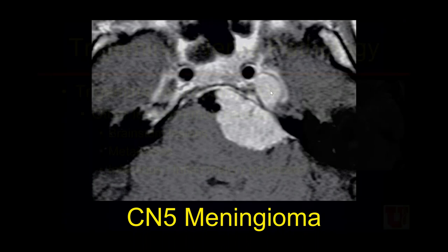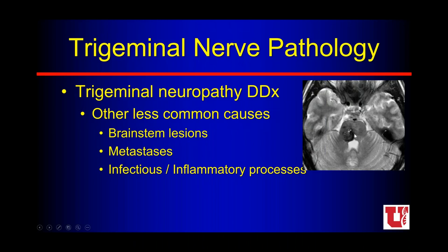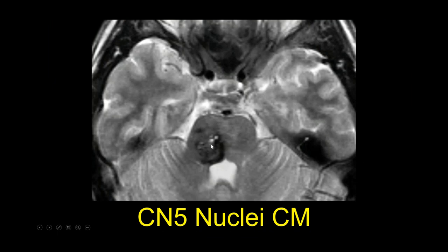Central pathology within the pons can also affect CN V. We have four central cranial nuclei contributing to the trigeminal nerve, so pathology there may cause clinical trigeminal abnormalities. A cavernous malformation in the pons — multiloculated, with fluid-fluid levels showing blood products of different ages, old blood pushed to the periphery on gradient sequences — located right where the fifth cranial nerve central nuclei are is a good reason for a patient to present with a fifth cranial nerve deficit.